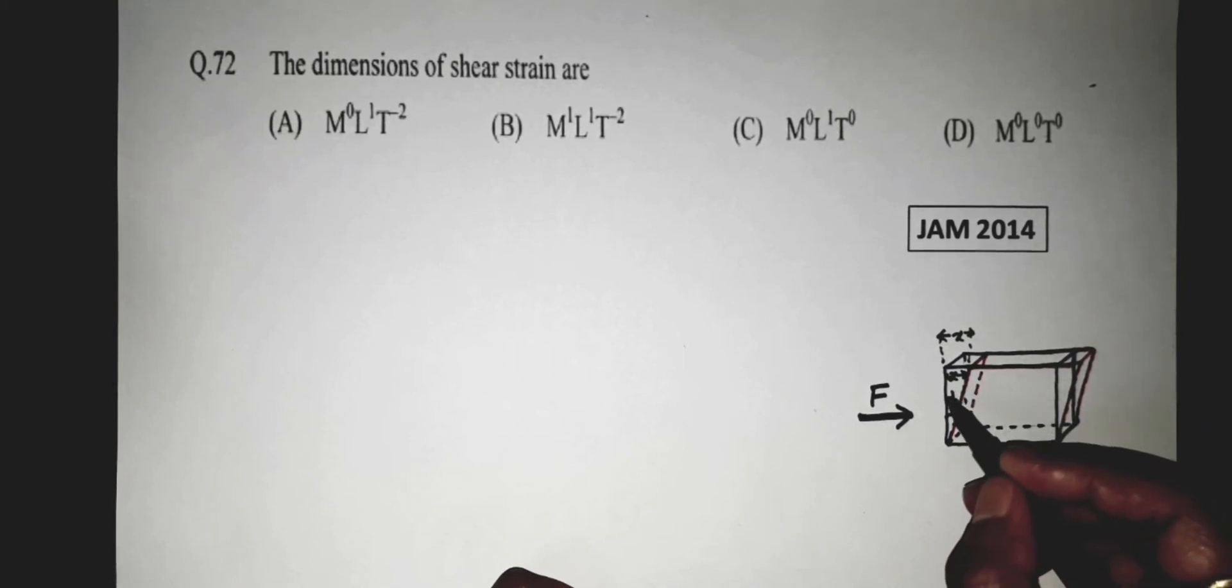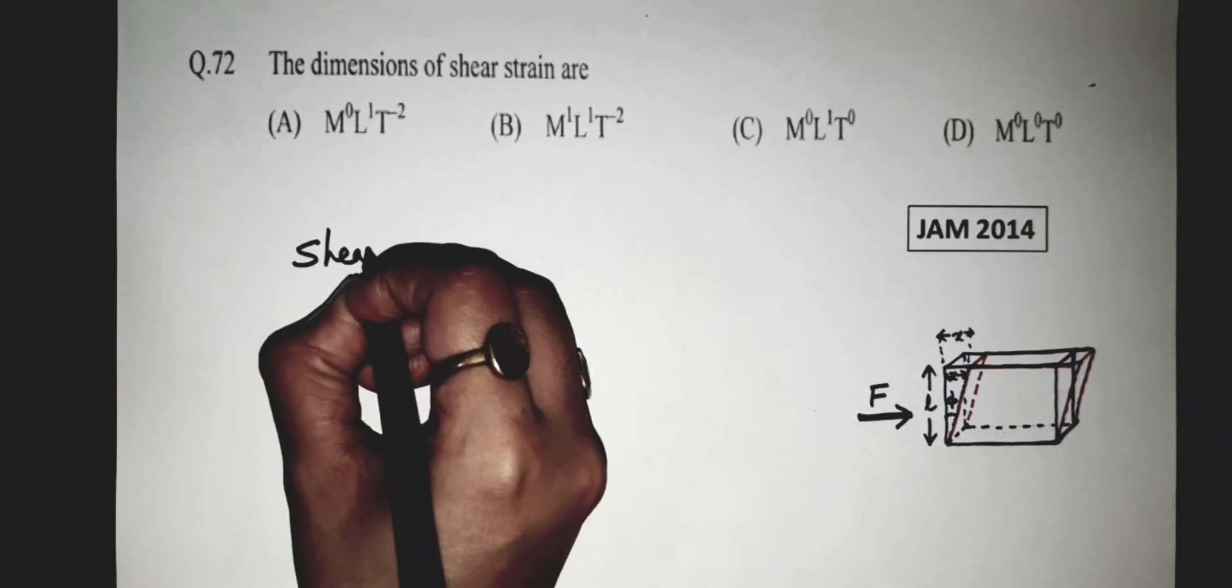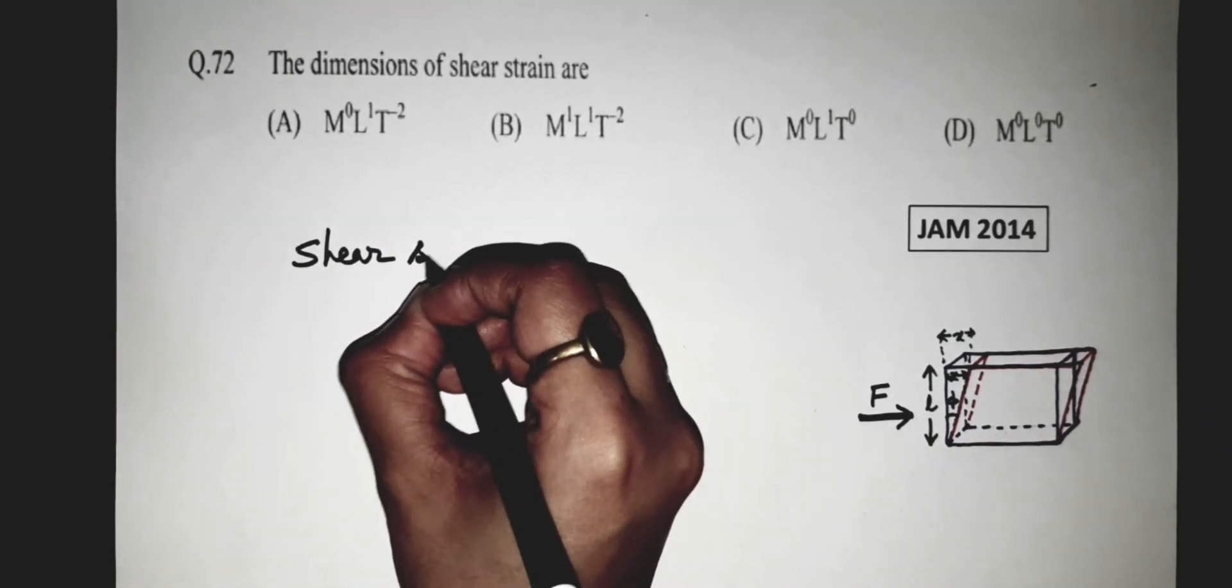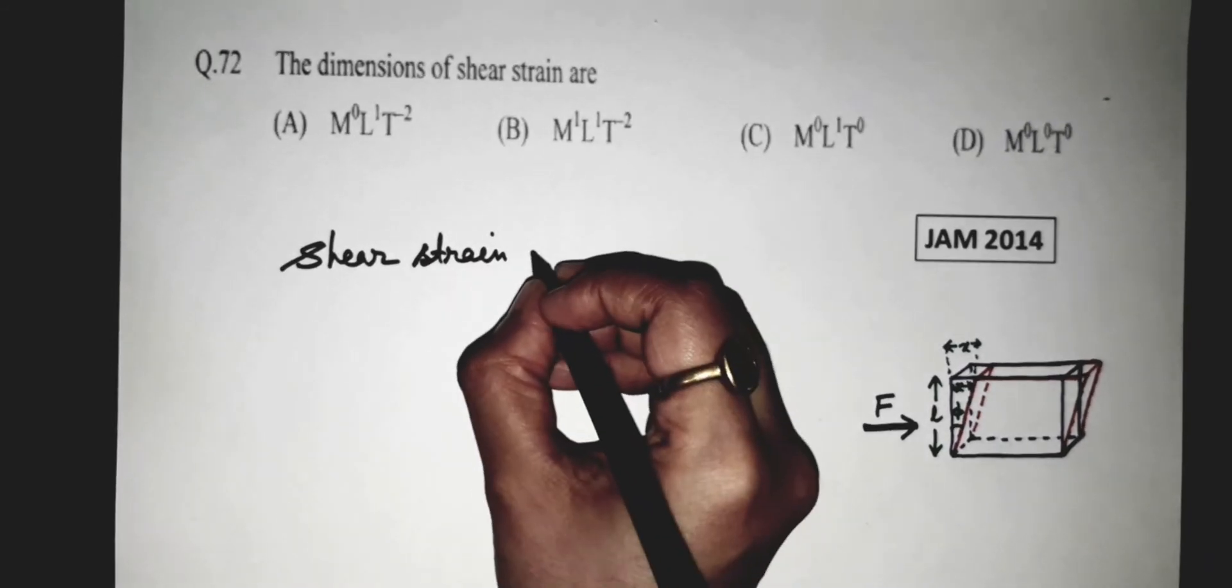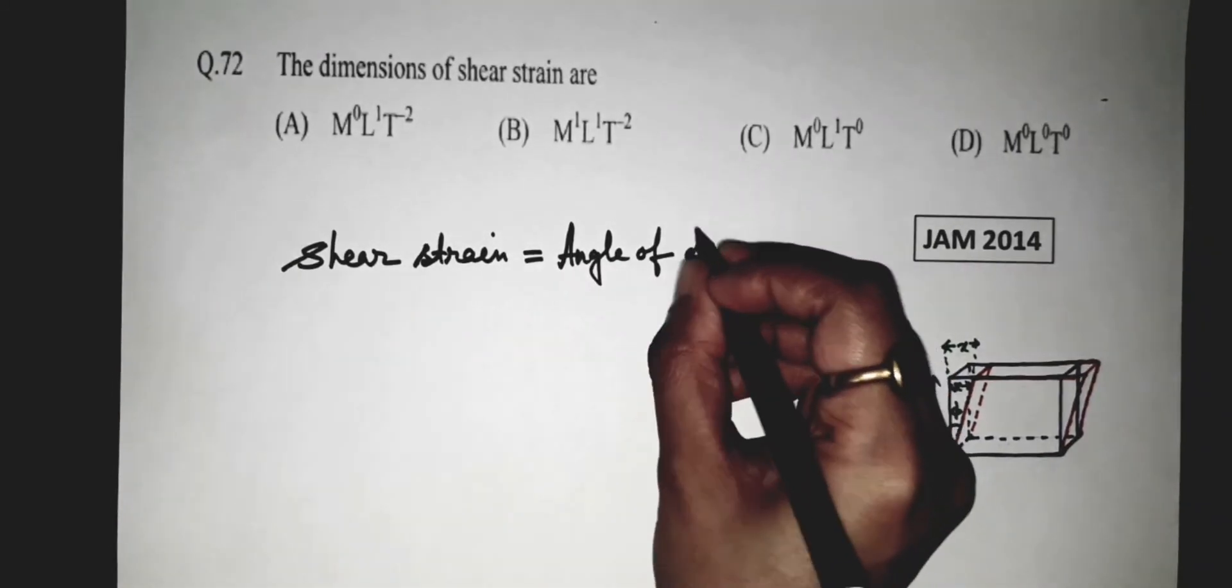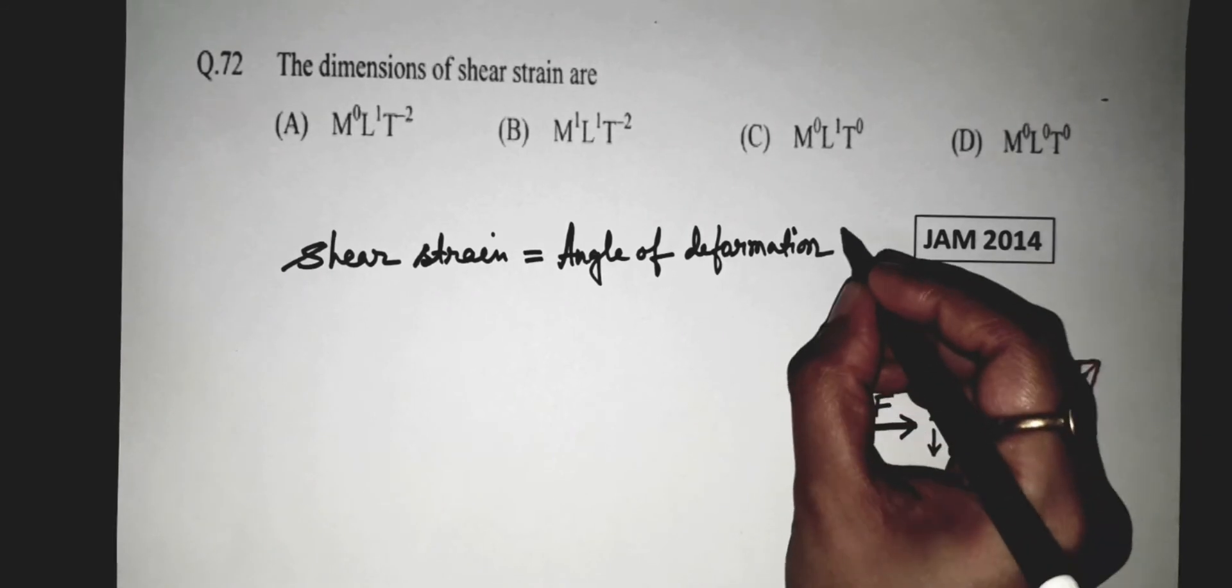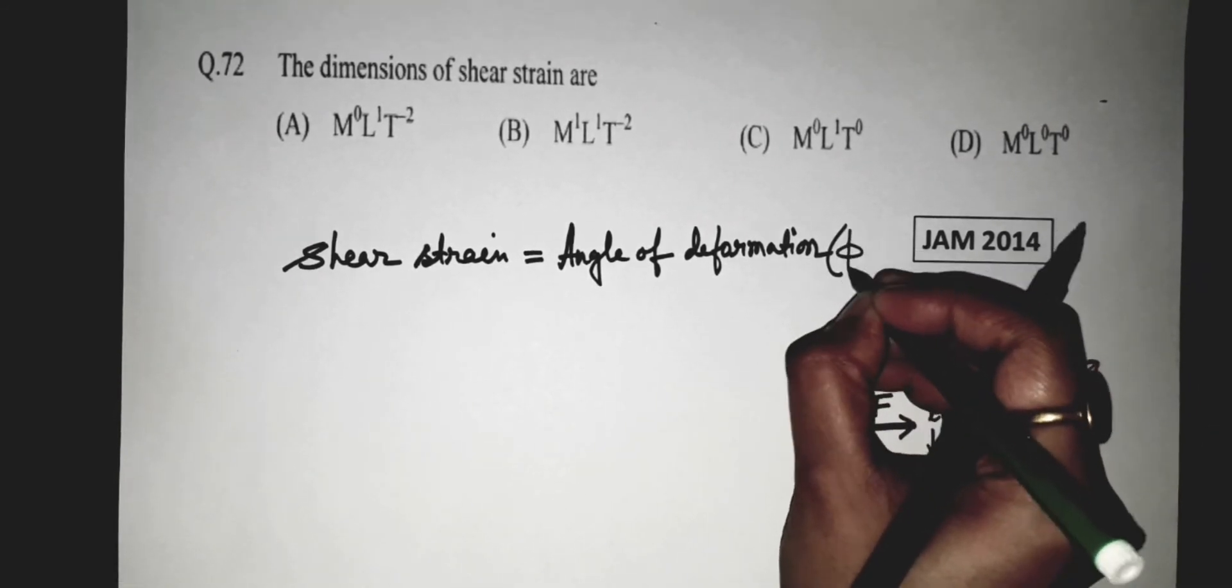Now, the length of this object perpendicular to the plane of applied force is, suppose, this is L. This is given by L. Then shear strain is equals to angle of deformation. Here, the angle of deformation is phi.